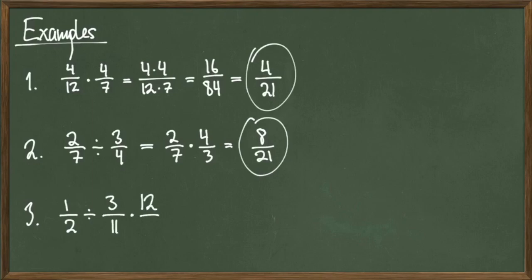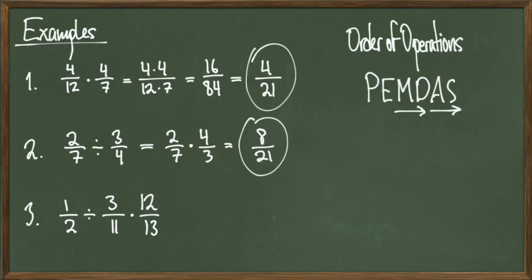For our last example, consider 1 over 2 divided by 3 over 11 times 12 over 13. So we have to think about how to start first because we have two operations happening. It's the order of operations here that tell us what to do next. Recall that in the order of operations, multiplication and division will happen from left to right. So, in this problem, we will divide first because division is to the left of multiplication in this setting, and we proceed like so.